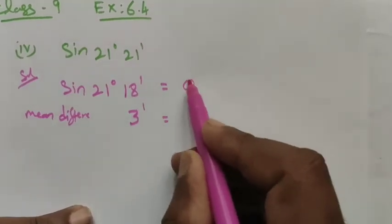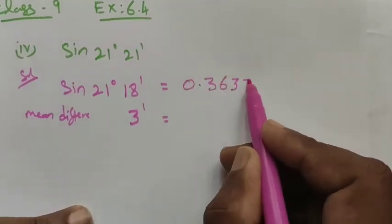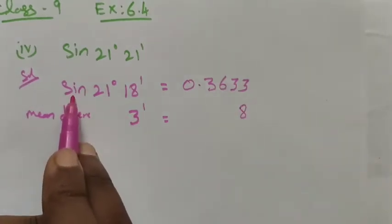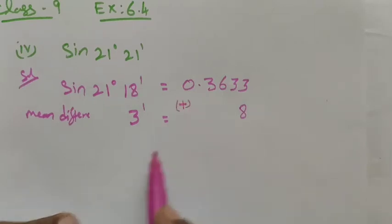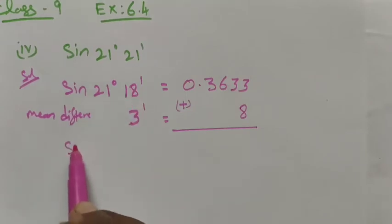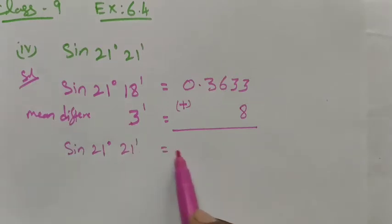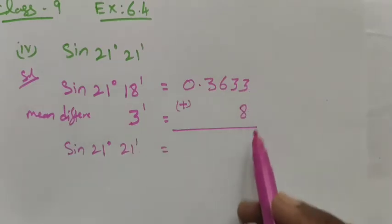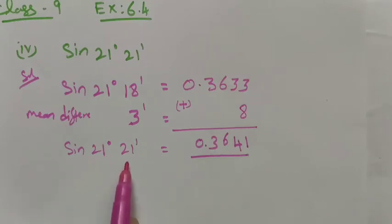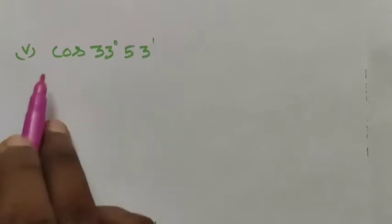So sin 21 degree 18 minutes is 0.3633, and the mean difference for 3 is 8. While we are finding the sine, we want to add the mean difference. So here we have the value sum of this value is sin 21 degree, and the sum of this is 21 minutes. This is equal to: add the term, 8 plus 3 is 11, 11 plus 1 is 4, 6, 3. So 0.3641 is the value of sin 21 degree 21 minutes.